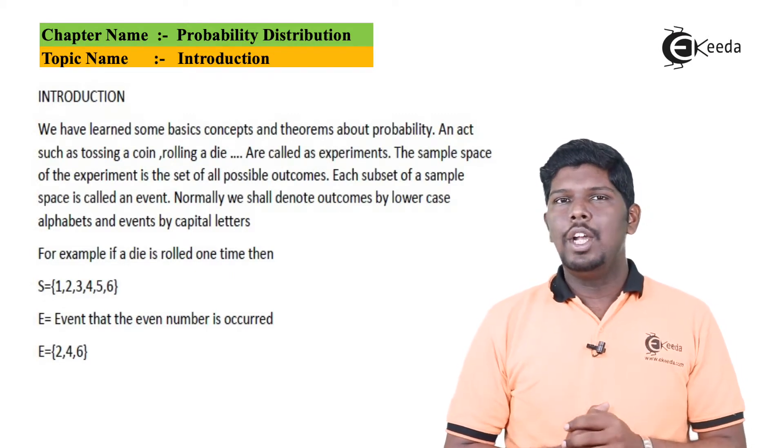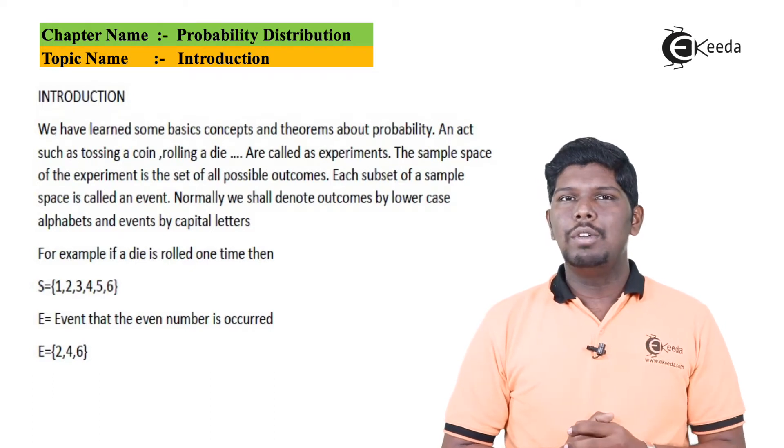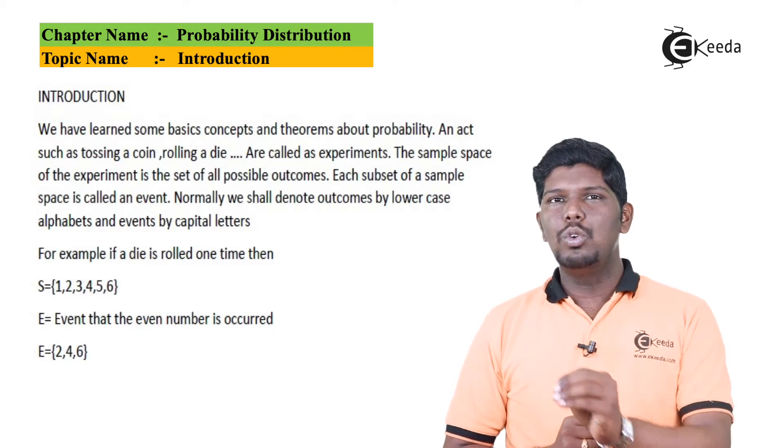Now, if I say if E is an event of an even number, so what are the even numbers from an observation of die? We have 2, 4, and 6. So the final answer will be E is equal to 2, 4, and 6.